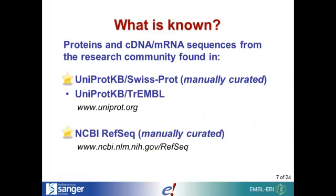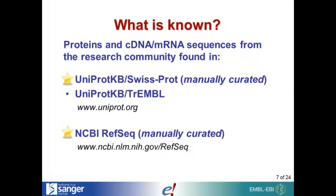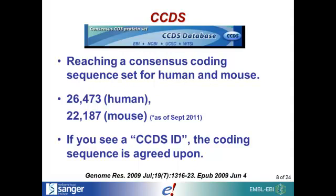Looking at our gene set and where it comes from: all of our transcripts go back to a protein, cDNA, or mRNA sequence, and most of these are found in the Uniprot Knowledge Base or NCBI Reference sequence set. Manual curation means looking at each protein on a case-by-case basis — experts look at that protein, look back at the literature, and decide if that protein looks like a real expressed protein or not. If it is manually curated, it's in the SwissProt set. Trembl contains all sequences in EmblBank that have been translated, so you will get some hypothetical proteins which have yet to be reviewed.